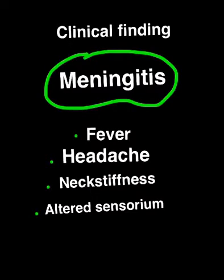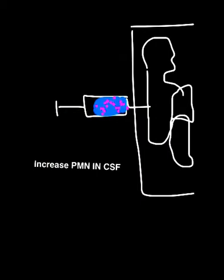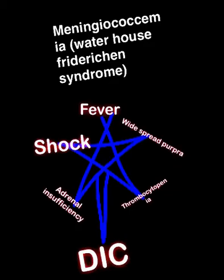When this organism ascends to the meninges, resulting in meningitis, the patient presents with the following features: fever, headache, neck stiffness, altered sensorium, and an increased number of polymorphonuclear cells in the CSF.